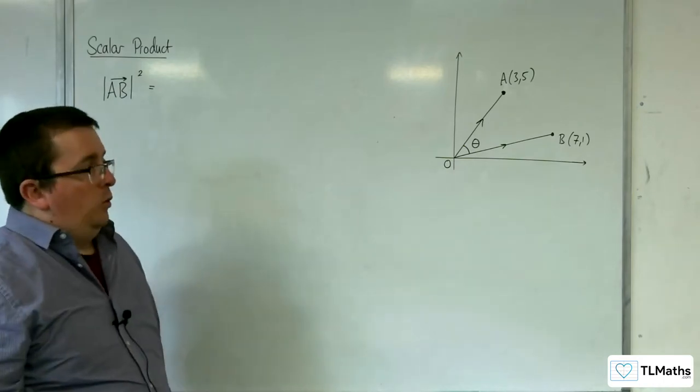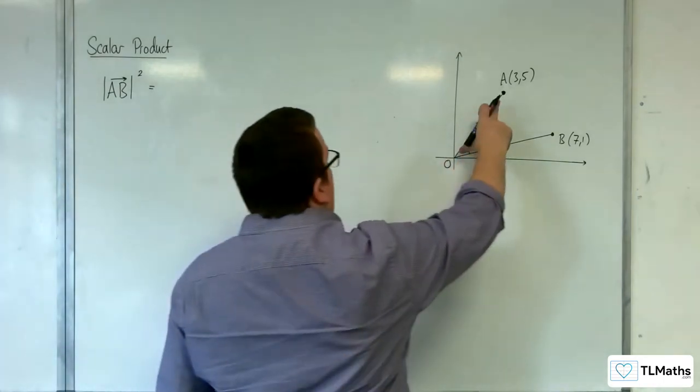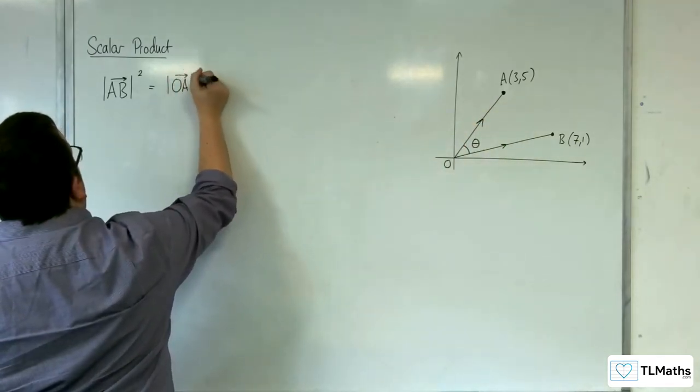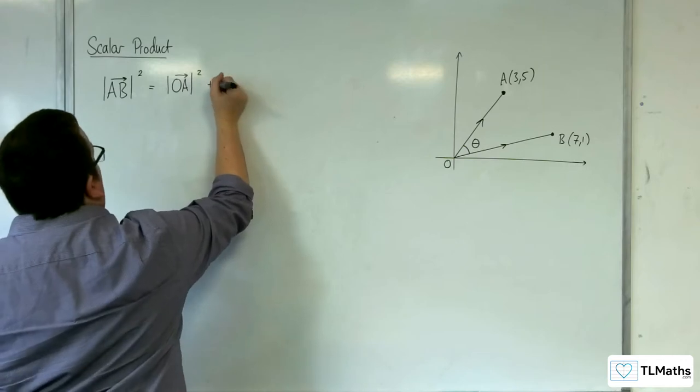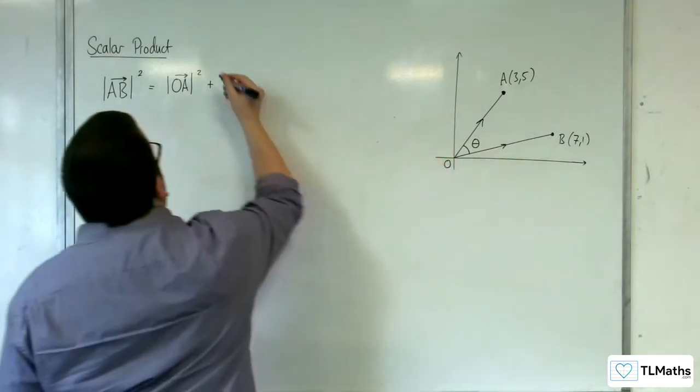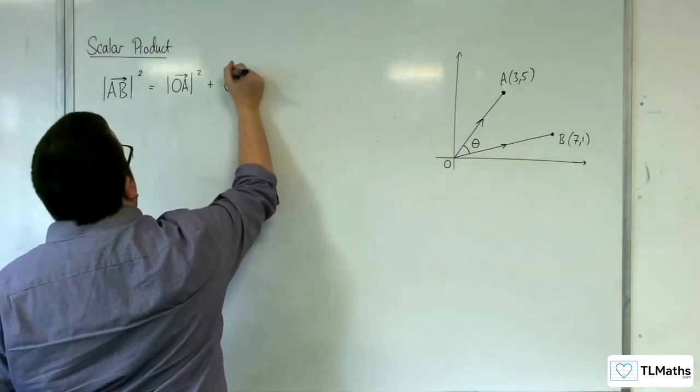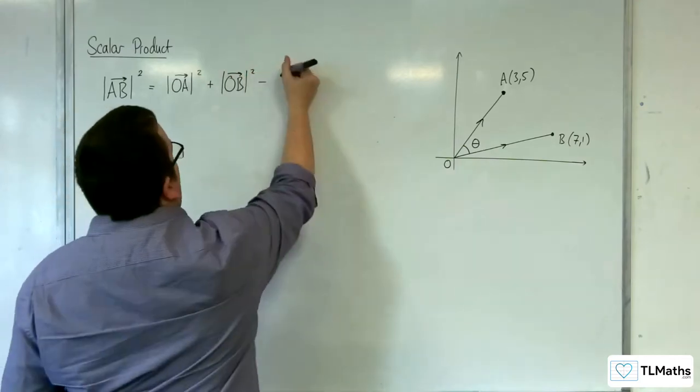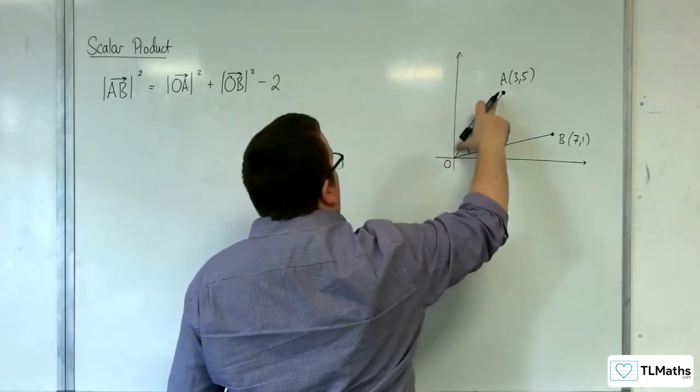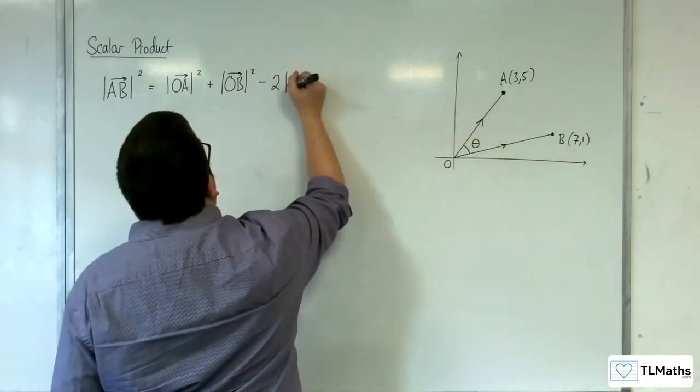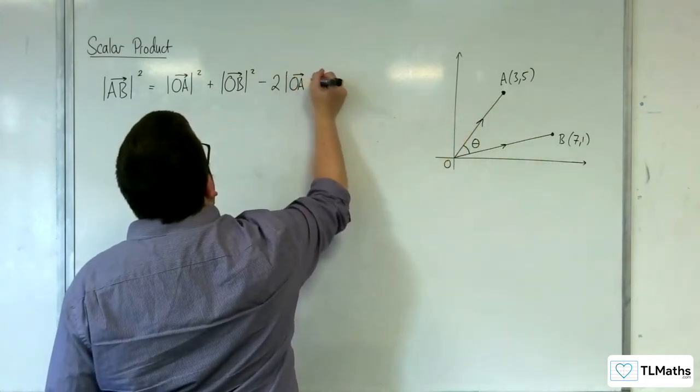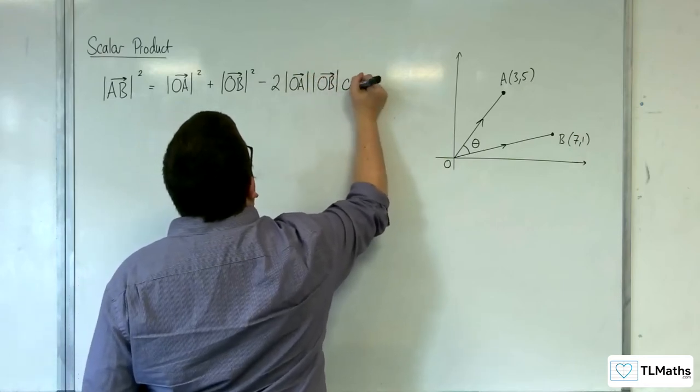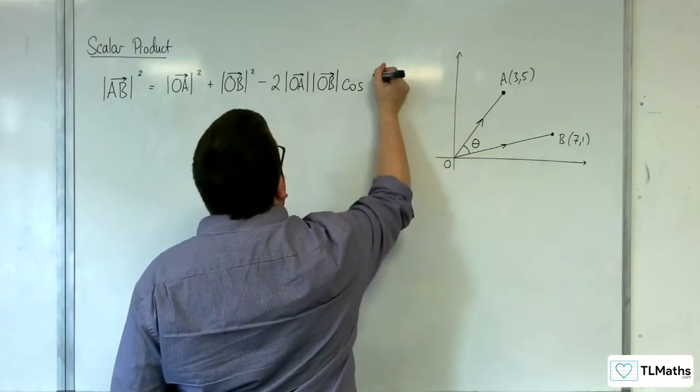would be equal to the length of this side squared, so OA squared, plus the length of this side squared, so OB, the length of that squared. Take away two times that length times that length, so OA times OB times cosine of the angle theta.